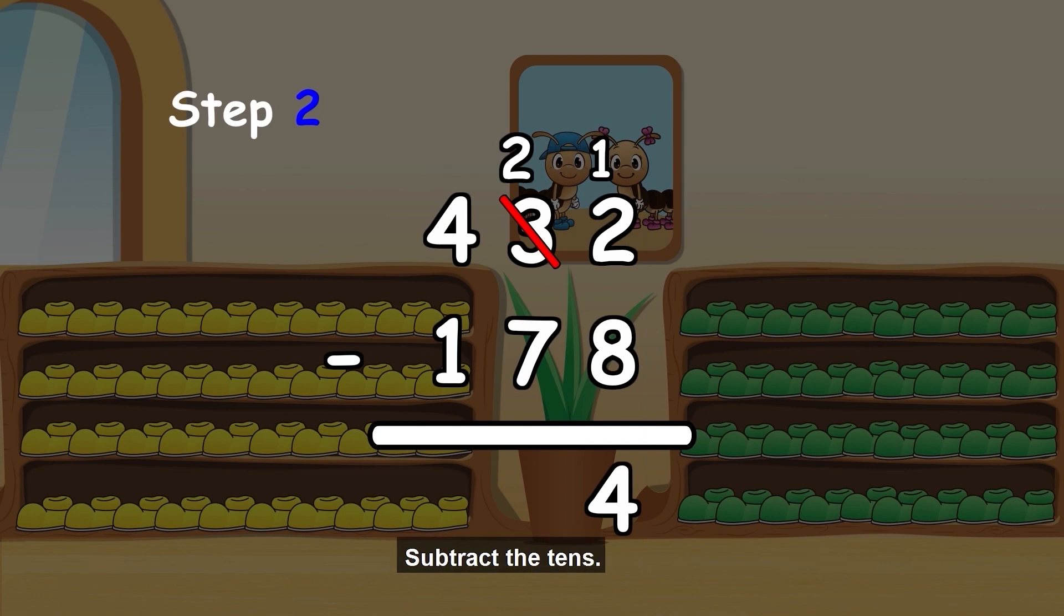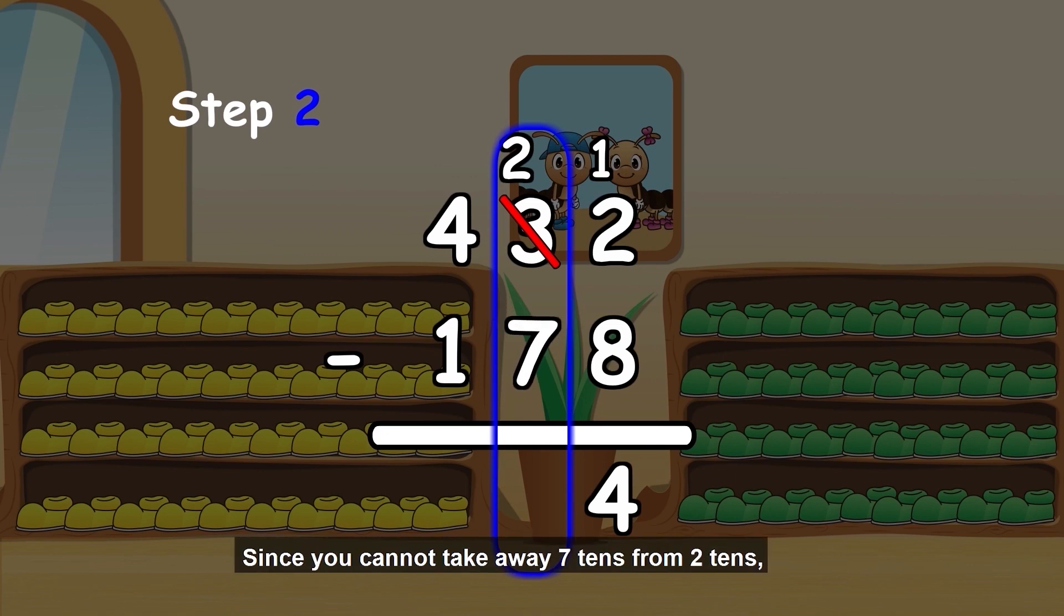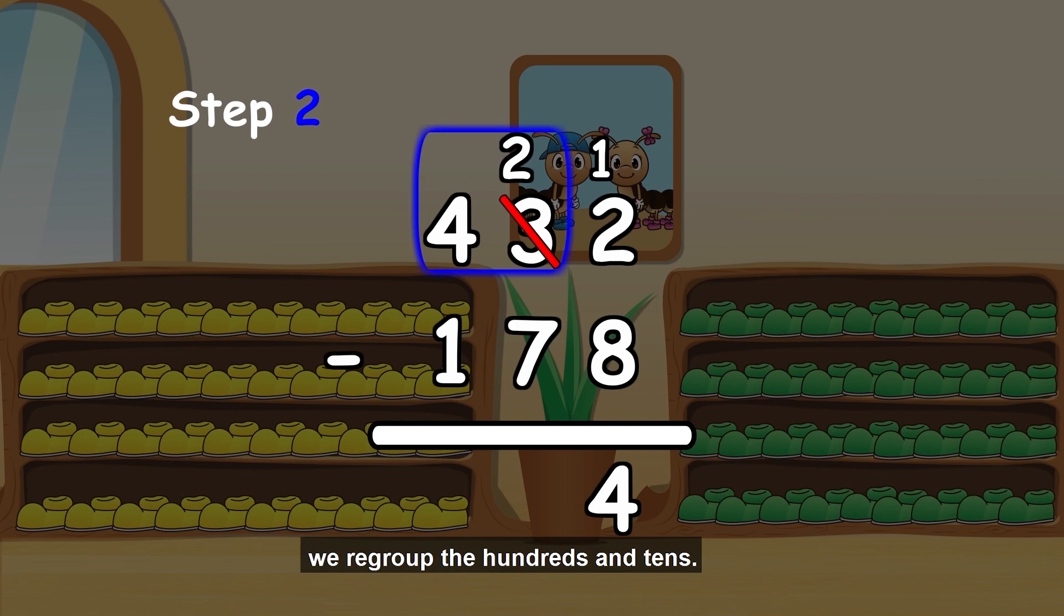Step 2. Subtract the tens. 2 minus 7. Since you cannot take away 7 tens from 2 tens, we regroup the hundreds and tens.